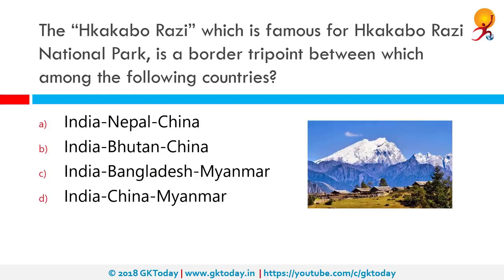The Karbo Razi, which is famous for Karbo Razi National Park, is a border tri-point between which among the following countries? Karbo Razi is believed to be Myanmar's highest mountain at 5,881 meters and the probable highest mountain in Southeast Asia. It is located in the northern Myanmar state of Kachin in an outlying sub-range of the greater Himalayan mountain system, near the border tri-point with India and China. The correct answer is India, China, Myanmar.